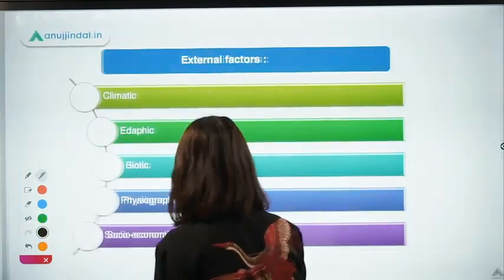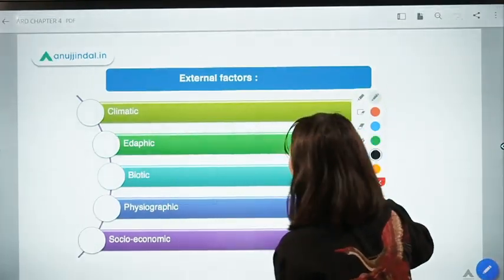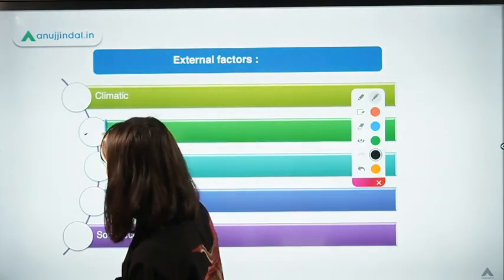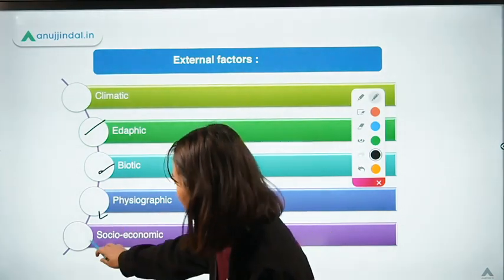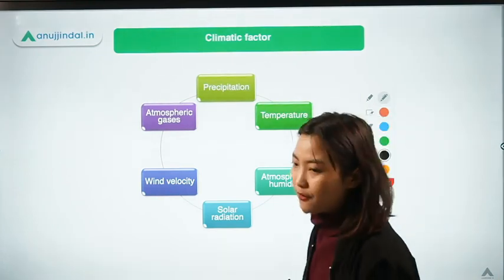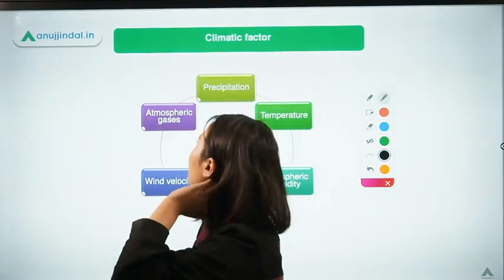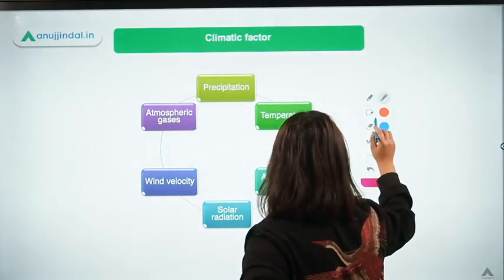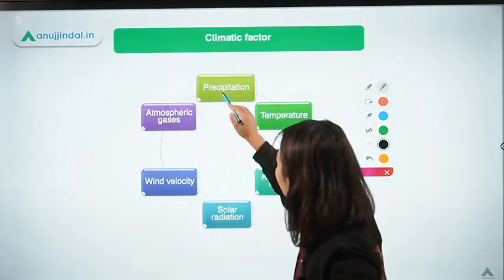Coming to external characteristics — we've already talked about climatic, edaphic, biotic, physiographic, and socio-economic factors. Now coming to the climatic factors. This is one of the most important factors, as these have different categories which affect the normal growth and development of plants. The first one is precipitation.